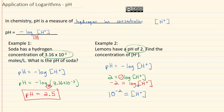And now we know that the hydrogen concentration of a lemon is 10 to the negative 2 moles per liter, or 0.01 moles per liter.